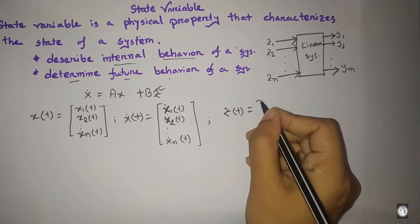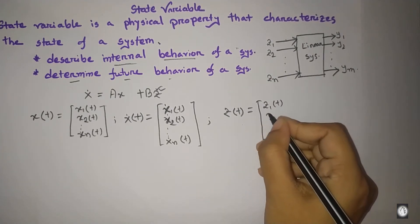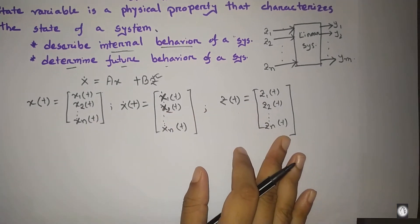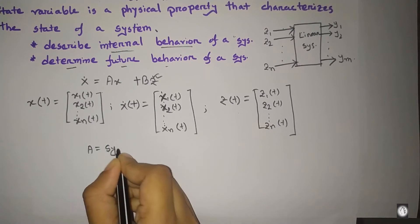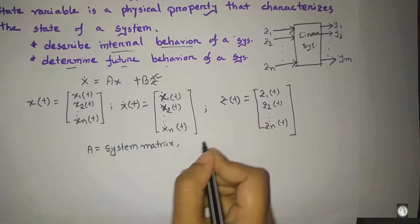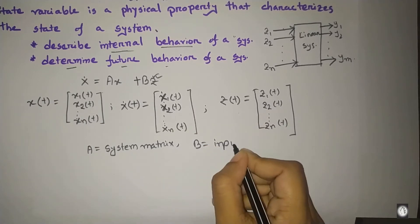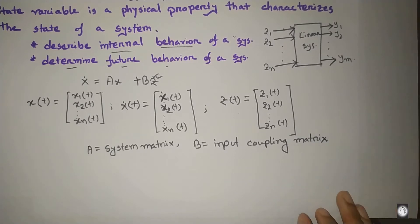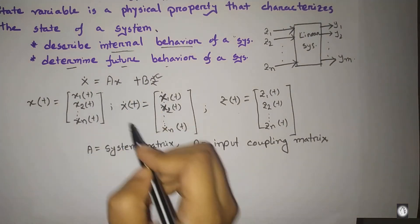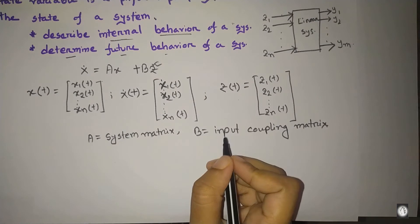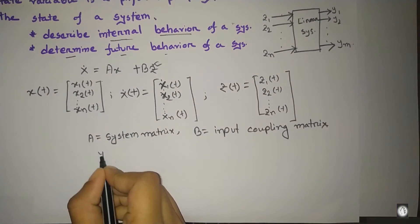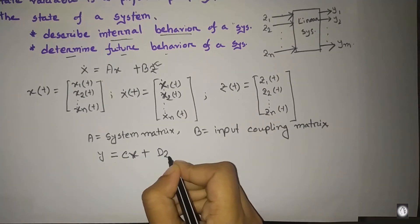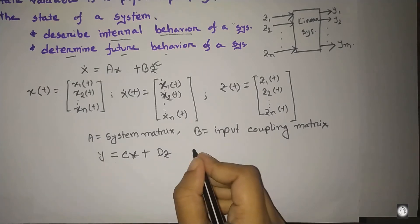For system analysis, z(t) is the input matrix containing z1(t), z2(t), up to zn inputs. There are two matrices: A matrix and B matrix. The A matrix is called the system matrix.